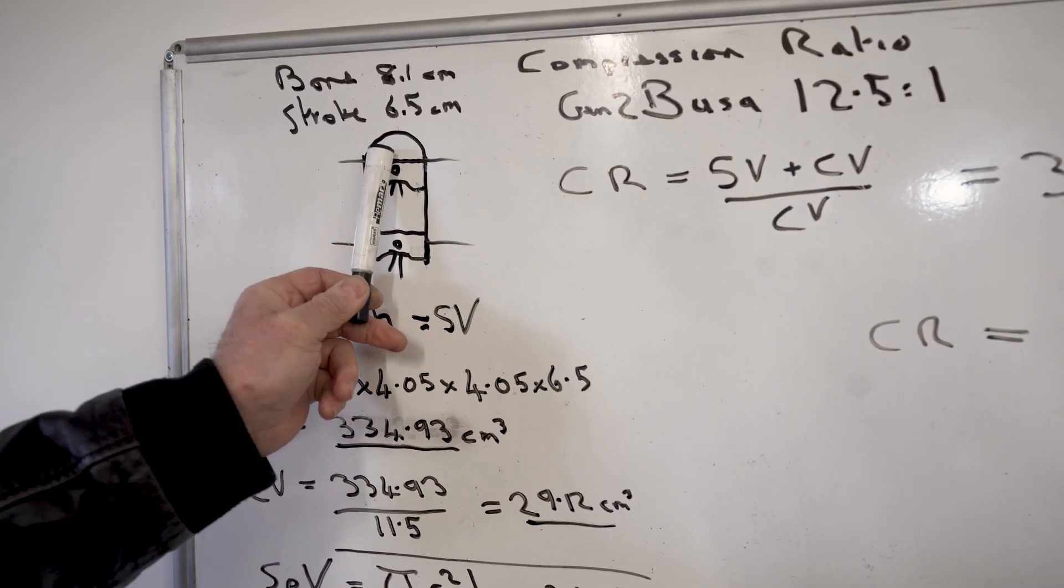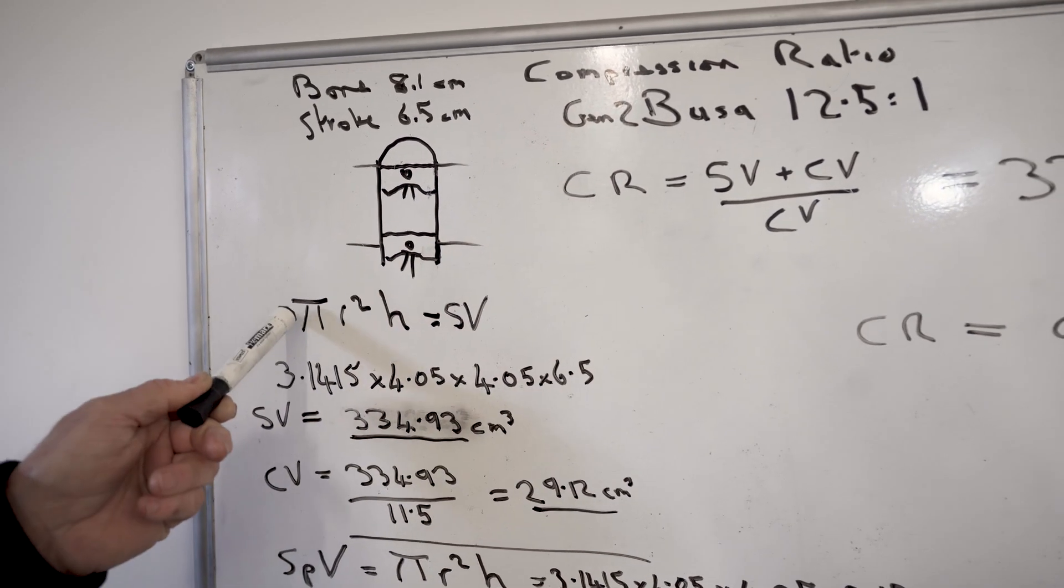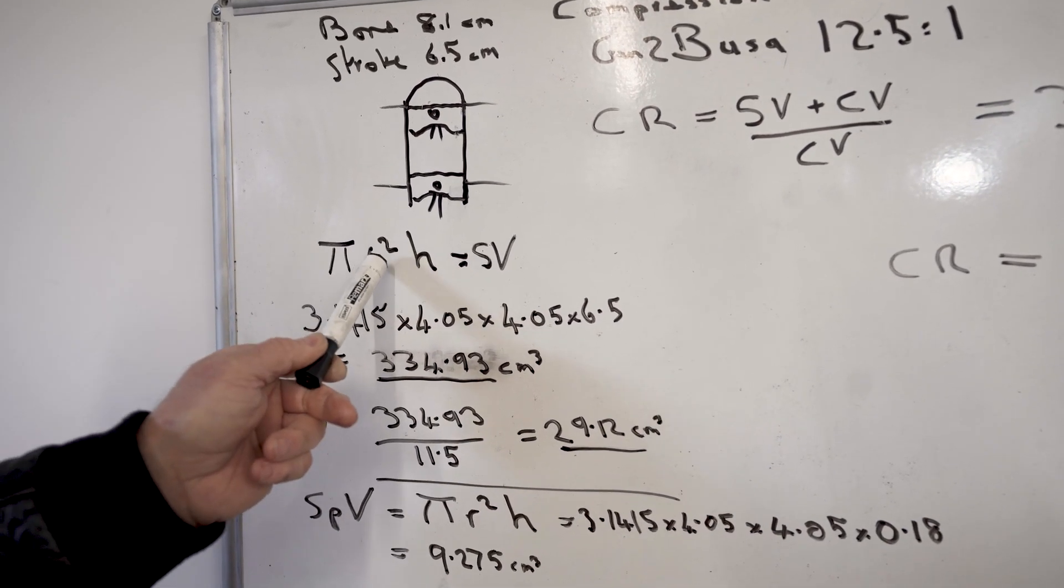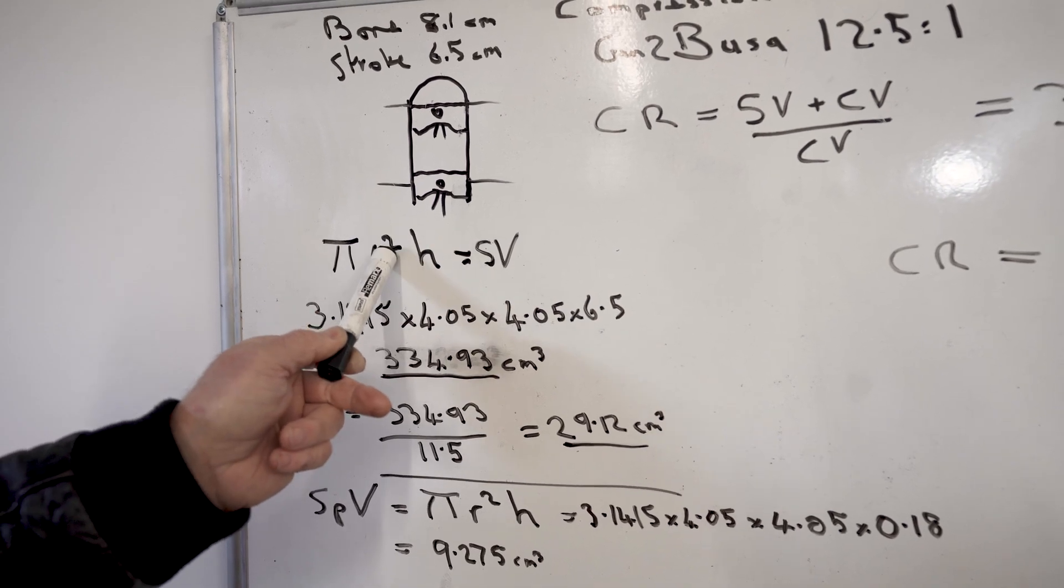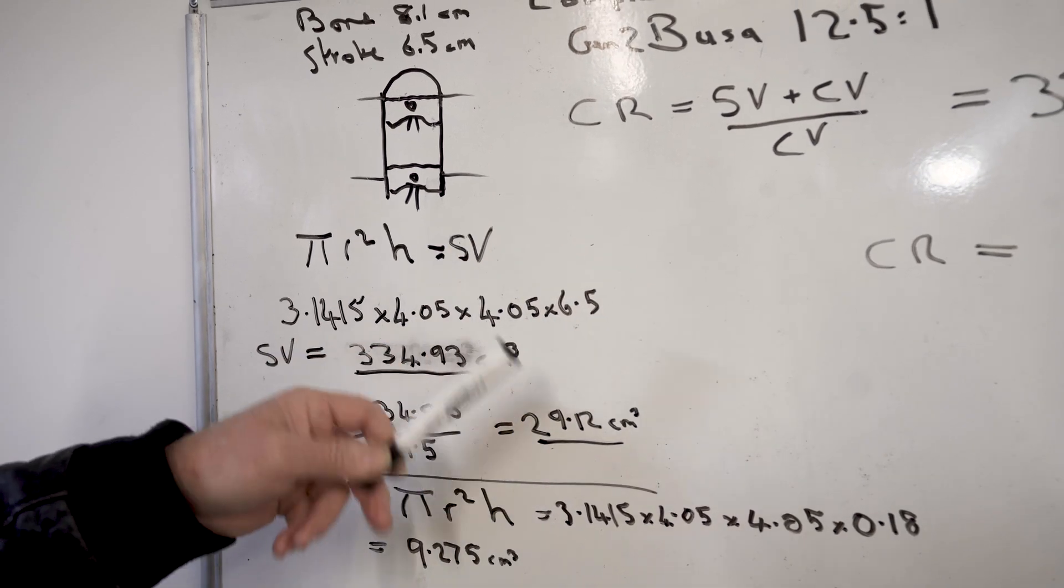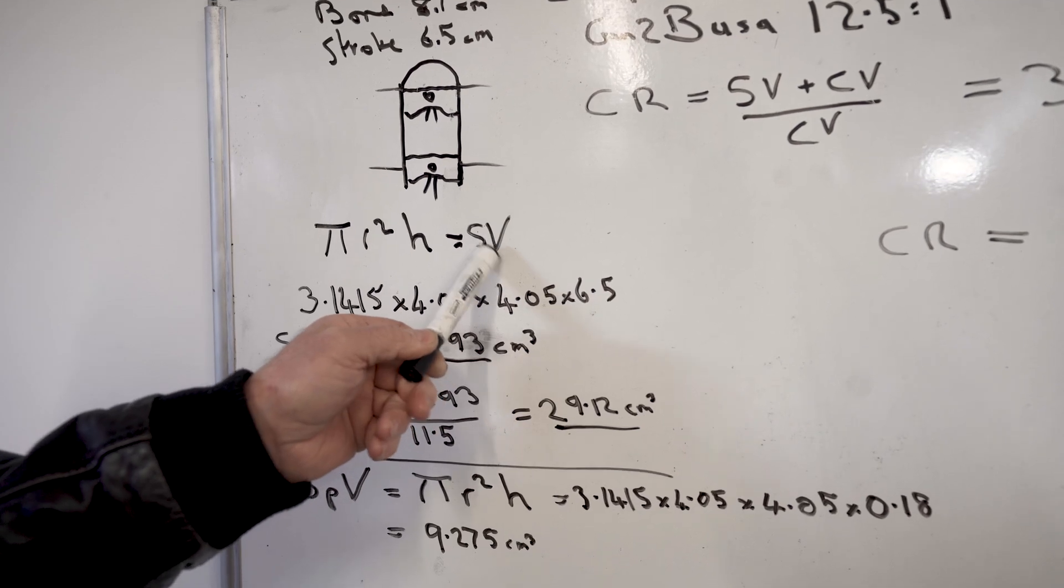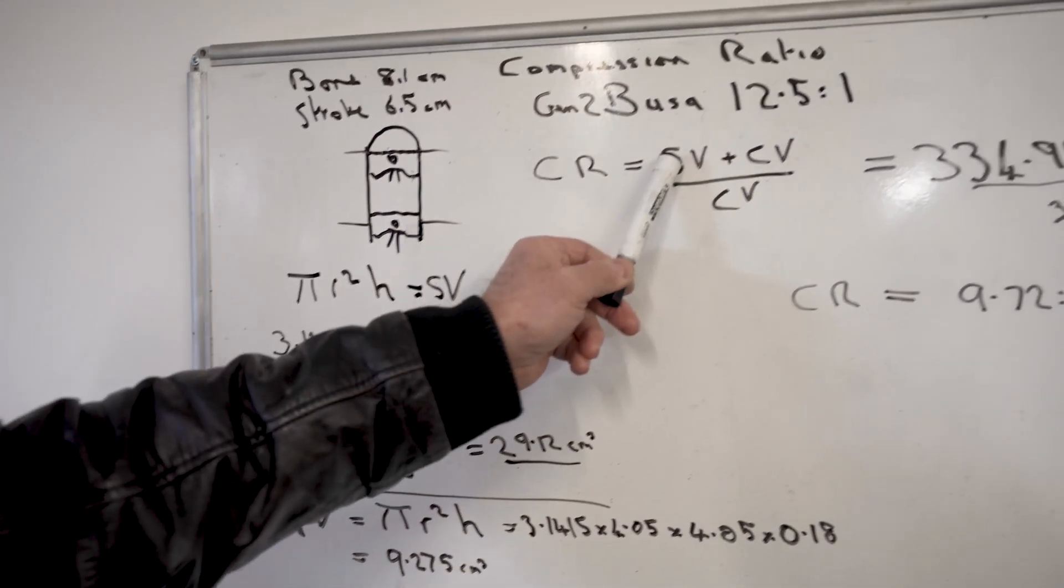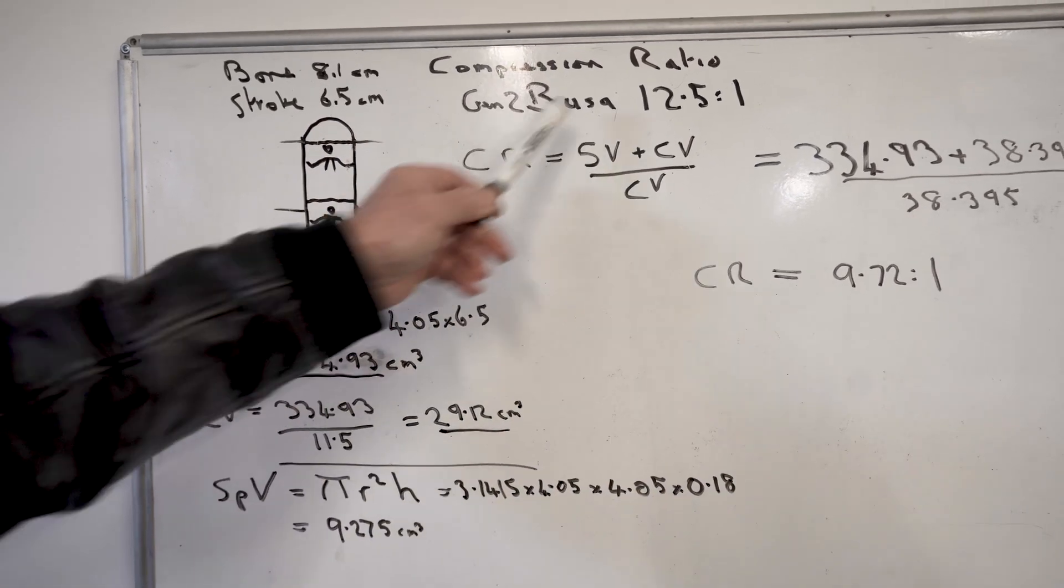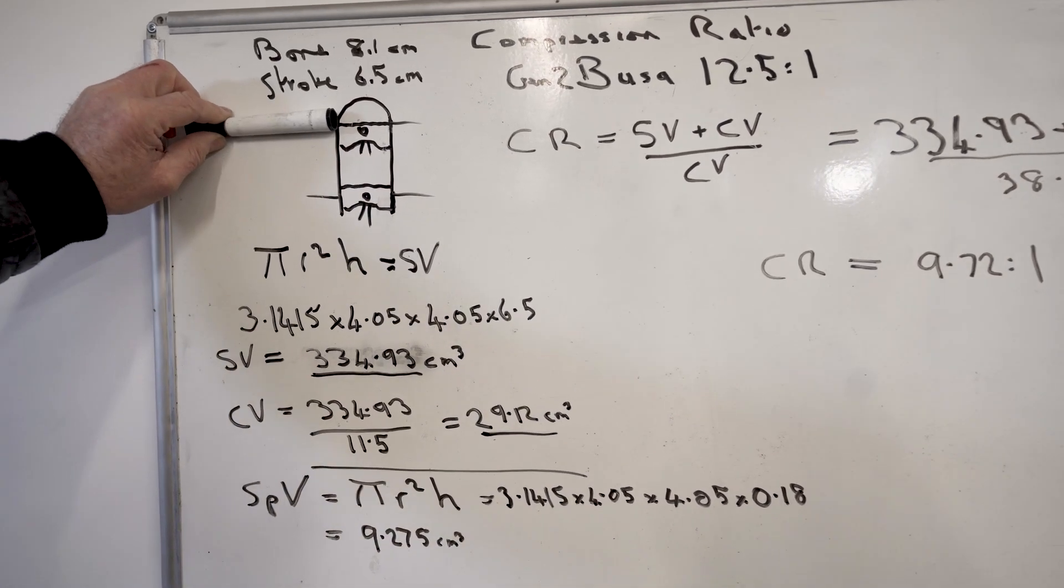So if this is the bore of the engine, piston at the bottom, piston at the top, the swept volume is bottom to top. The math for it is πr²h, that's pi times half the bore times half the bore times the stroke. That equals the swept volume. But the swept volume is that bit, we've still got this bit here. So we know that we've got 12.5 to 1, so the swept volume must be 11.5 ratio, 11.5 times what we've got in the top.